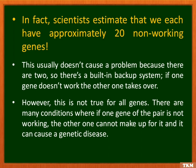Scientists have estimated that we each have approximately 20 non-working genes. This usually doesn't cause a problem — it doesn't mean we are all abnormal. If one gene doesn't work, the other one is there to take over its function. But this is not true for all genes. There are many conditions where if one gene of the pair is not working, the other one cannot make up for it, and it can cause a genetic disease.